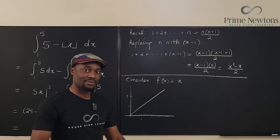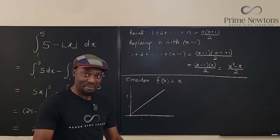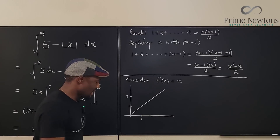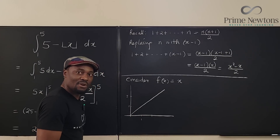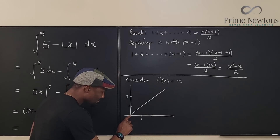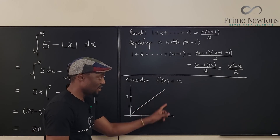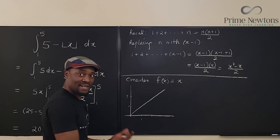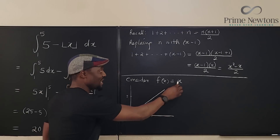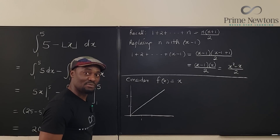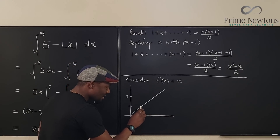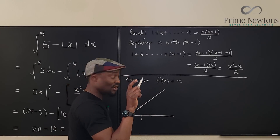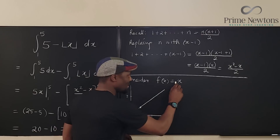So if you put in anything less than 1, you get 0, not 1. Remember, you can find the area under the identity line by constructing a triangle. Now let's change the function to the floor function and see what changes about the graph.